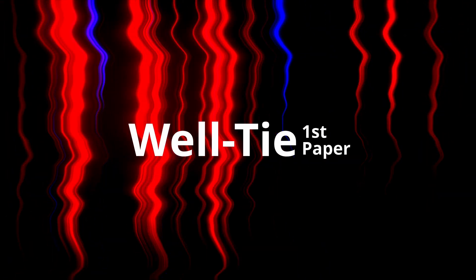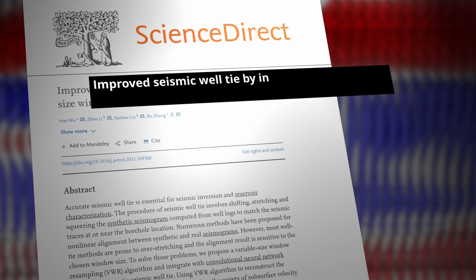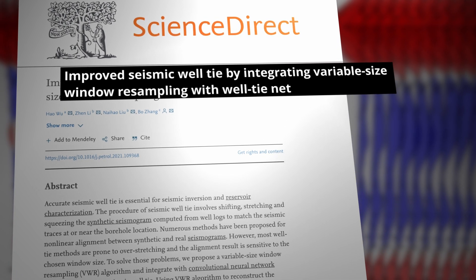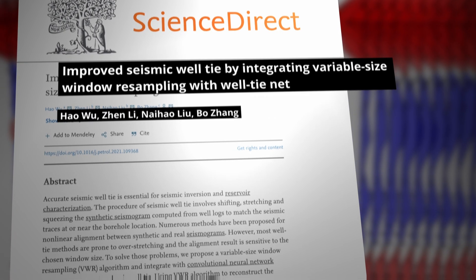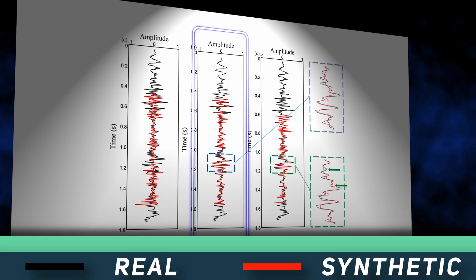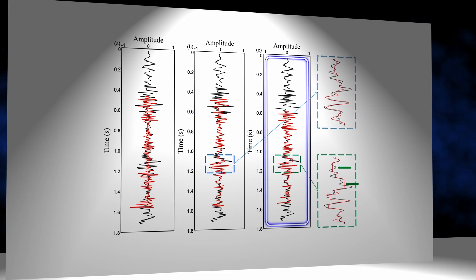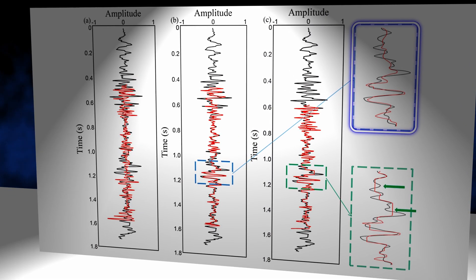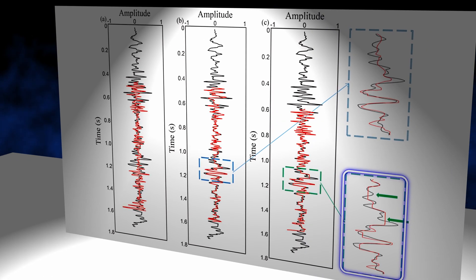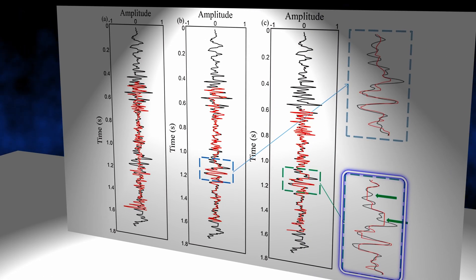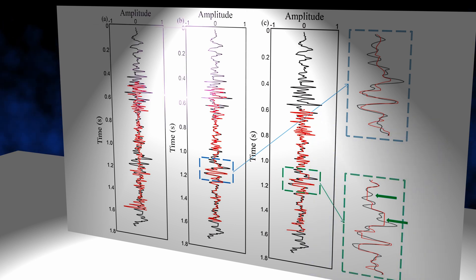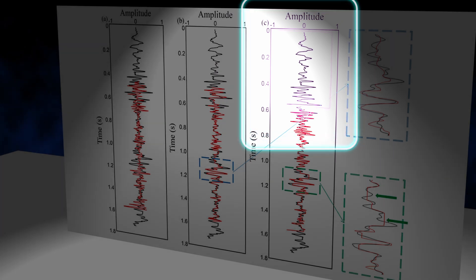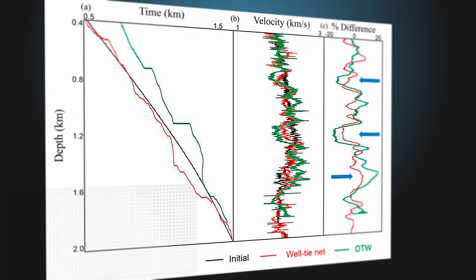The first paper I want to cover is titled 'Improved Seismic Well Tie by Integrating Variable Size Window Resampling with Well-Tie-Net' by Hao, Wu, and co-authors. Here are the results of the proposed method on a real dataset and a comparison with DTW. Zooming in on the method shows a good match between the real and synthetic seismograms. In contrast, the DTW alignment results in several overstretched parts, shown by green arrows. Note that the DTW also shifted the start of the synthetic trace.